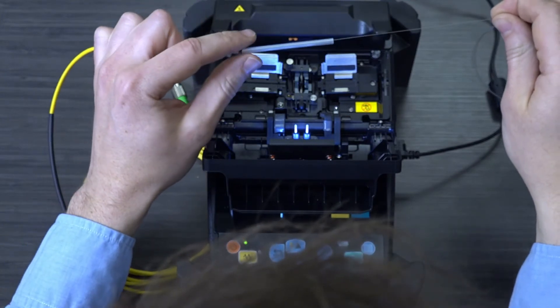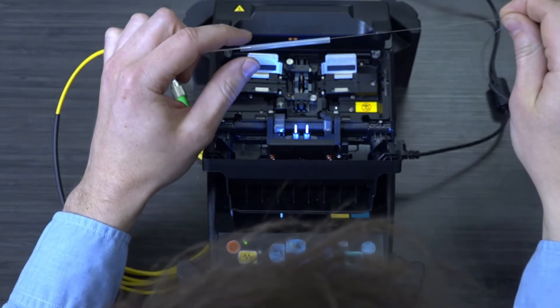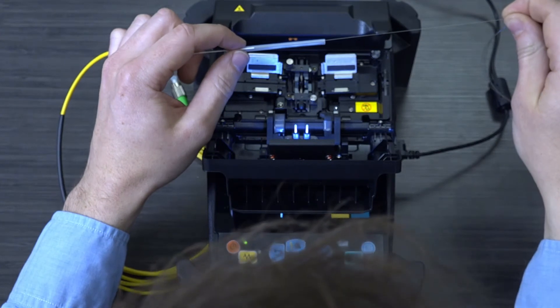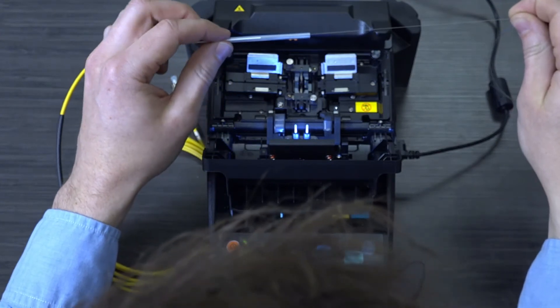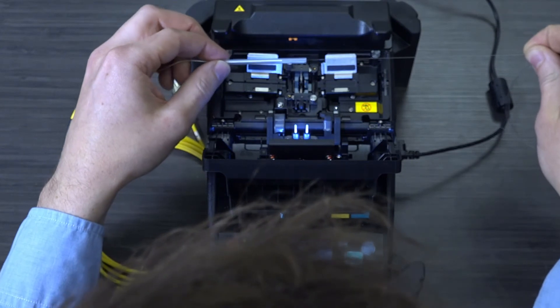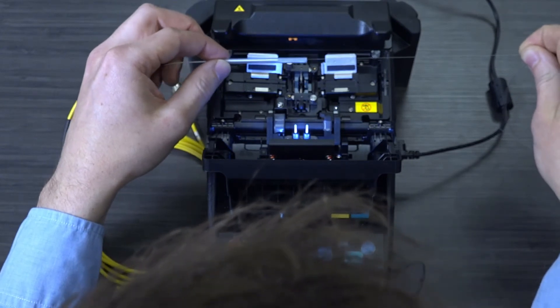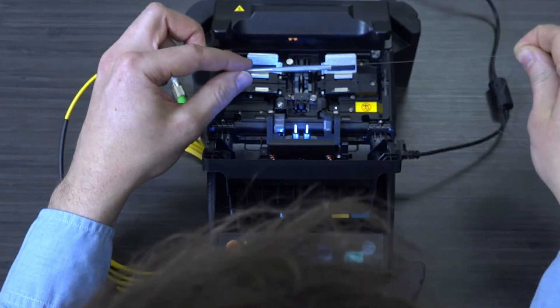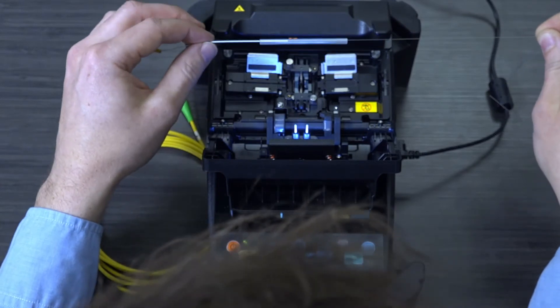And so I want this to perfectly span that splice, and I want the left side to actually grab onto that buffer material. You want to make sure you do not go too far left and expose the bare fiber on the right side. So I'm going to go back a little bit, put the splice right in the middle, and now it's ready to be heated.